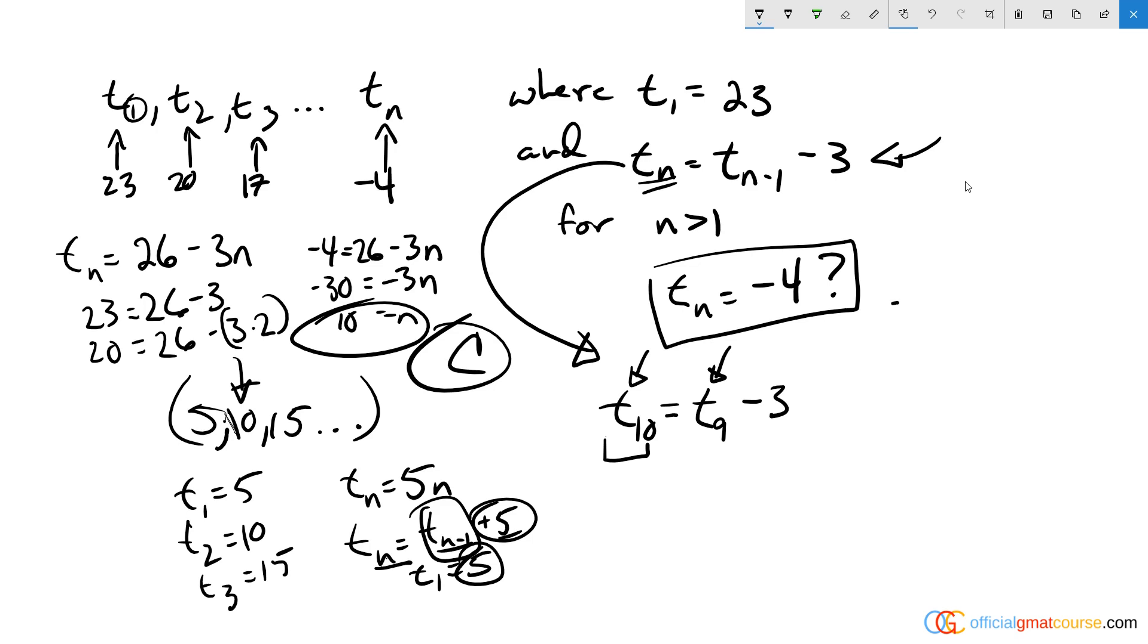And say, okay, t sub 1, t sub 2, t sub 3, because it's not that far. You can look and say, okay, from how far am I moving from 23 to negative 4? From 23 to negative 4 is a distance of 27 because we have to pass zero and then go four more.